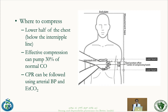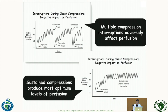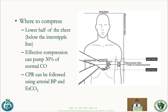Where do we compress? The correct position is to draw an imaginary line between the nipples and compress just below the center. Effective compression at that position generates about 30% of normal cardiac output, which can preserve brain function. CPR effectiveness can be followed using arterial BP and end-tidal CO2 monitoring if available.